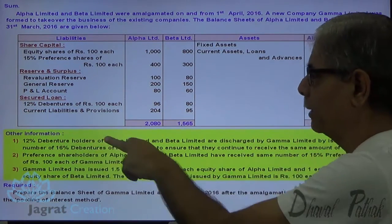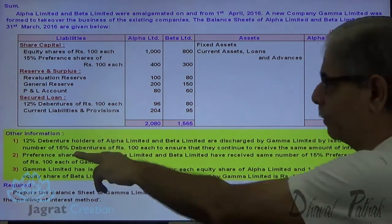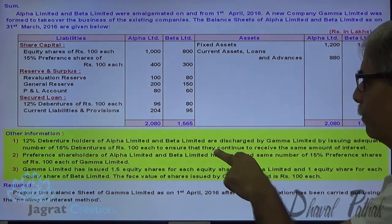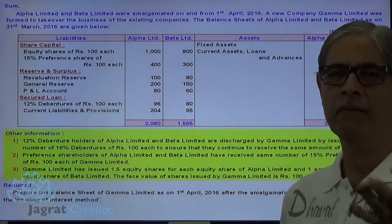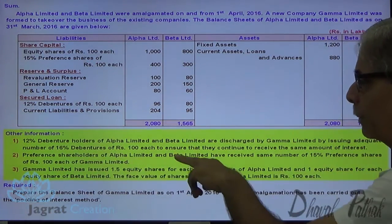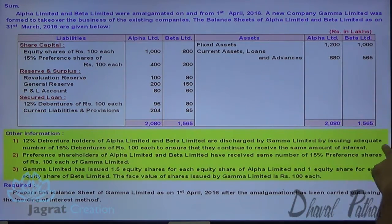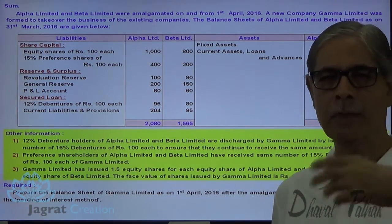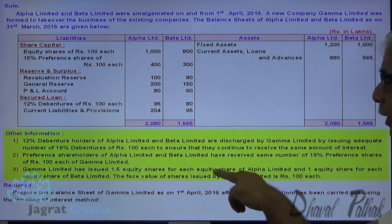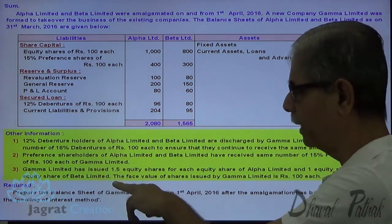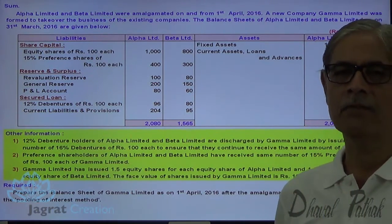Notice that 12% debenture holders of Alpha and Beta Limited are discharged by Gamma Limited by issue of adequate number of 16% debentures of ₹100 each, to ensure they continue to receive the same amount of interest. Preference shareholders of Alpha and Beta Limited have received the same number of 15% preference shares of ₹100 from Gamma Limited. Gamma Limited has issued 1.5 equity shares for each share of Alpha Limited, and 1 equity share each for Beta Limited. The face value of shares of Gamma Limited is ₹100 each.